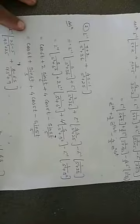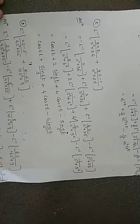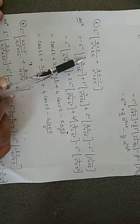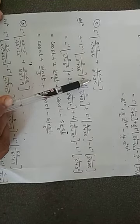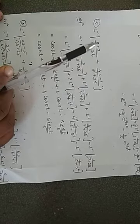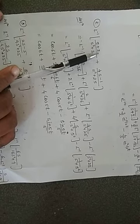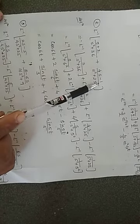Next, second problem: L inverse of s plus 2 upon s squared plus 36, plus 4s minus 1 upon s squared plus 25. Now, in the numerator there is a combination of two terms, so try to split these combinations.